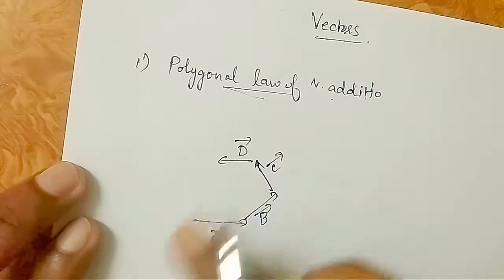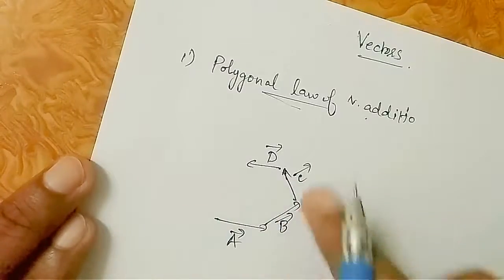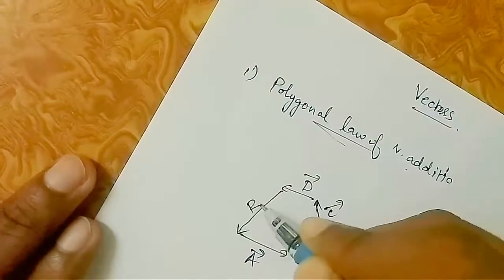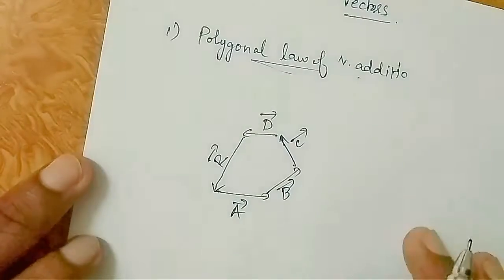When you add all the vectors in the polygon, when the polygon closes, this is the resultant. This is the polygonal law, where the resultant equals the sum of all the vectors.